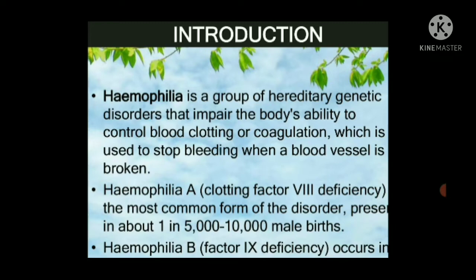Hemophilia is inherited from one generation to the next. The coagulation power gained by the body through clotting factors becomes deficient, which disturbs blood clotting control and the ability to stop bleeding when a blood vessel is broken. Hemophilia A involves clotting factor 8 deficiency and is the most common form, present in about one in five to ten thousand male births. Hemophilia B is caused by deficiency of clotting factor 9.